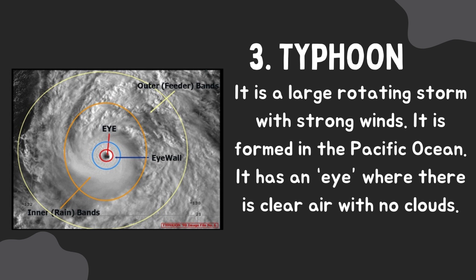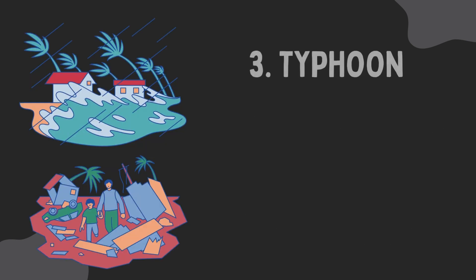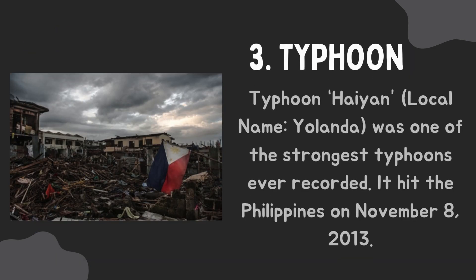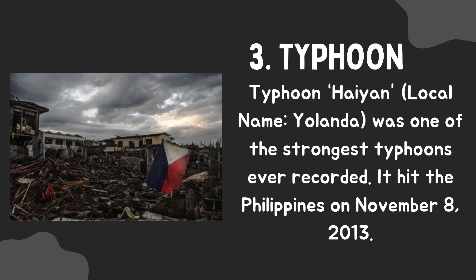Three, Typhoon. It is a large rotating storm with strong winds. It is formed in the Pacific Ocean. It has an eye where there is clear air with no clouds. During a typhoon, heavy rainfall and strong winds are observed. This leads to flooding and damage to structures such as buildings and houses. Typhoon Haiyan, local name Yolanda, was one of the strongest typhoons ever recorded. It hit the Philippines on November 8, 2013.